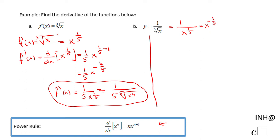So y prime in this case will be the derivative with respect to x of x to the negative 1 over 5 power, and here we're gonna pull that negative 1 over 5 up front and then we have x to the negative 1 over 5 minus 1.